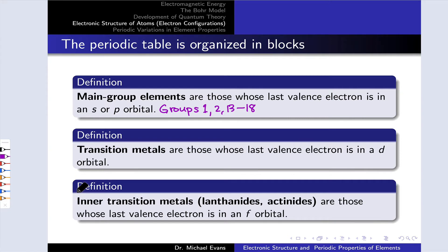The transition metals are those whose last valence electron, roughly speaking, is in a d orbital in the middle of the periodic table, and that's groups 3 through 12.